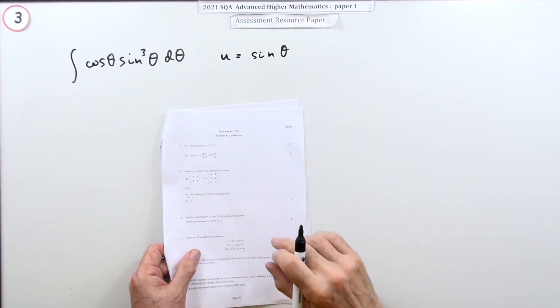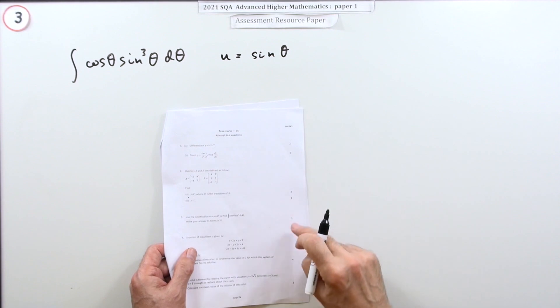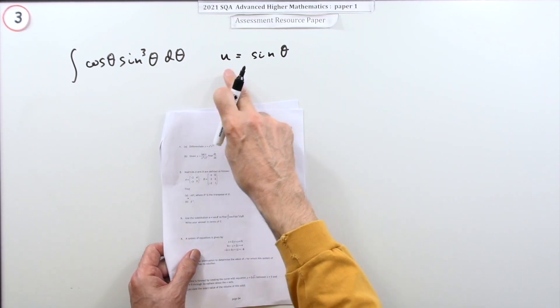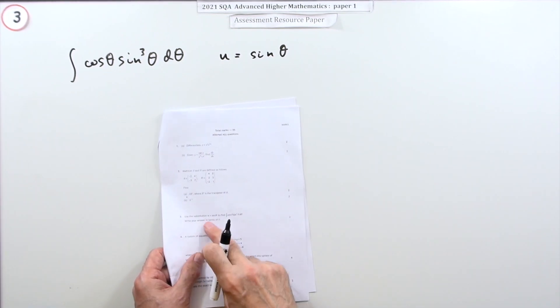So number three then, from paper one of the 2021 Advanced Higher resource paper. Just a little two mark question to carry out this integration using a given substitution, but you have to write your answer back in terms of the original variable theta.